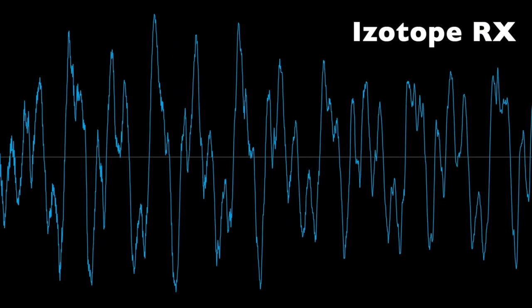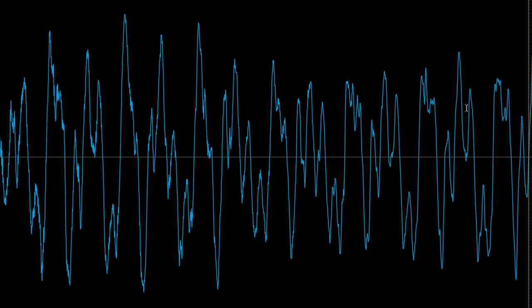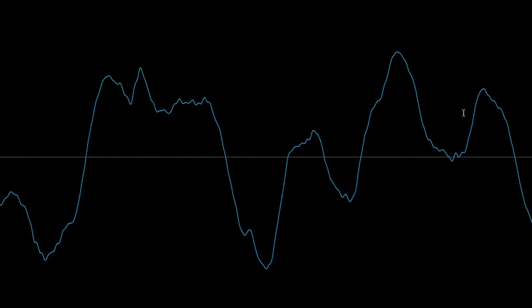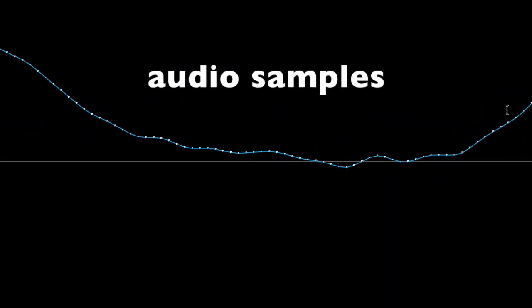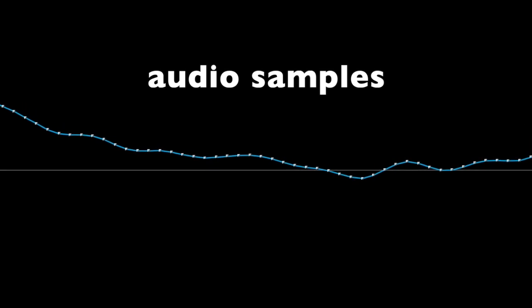I'm looking at a recording of a single note from a guitar in iZotope RX audio editor. If I zoom in far enough, you can see some tiny squares on the sound wave. These represent the individual data points that the computer stores. They're called audio samples.